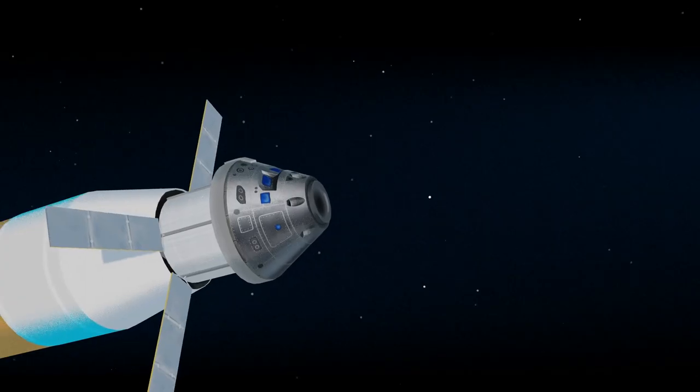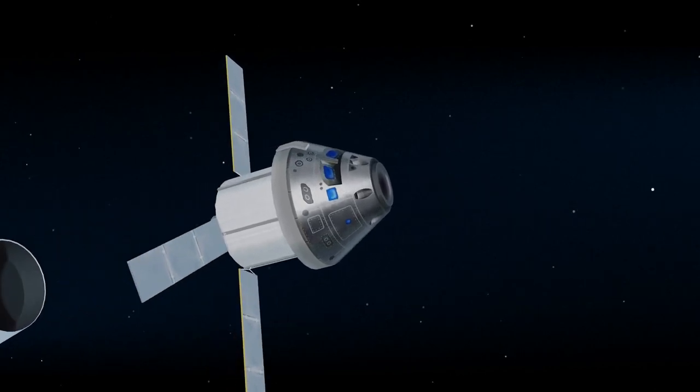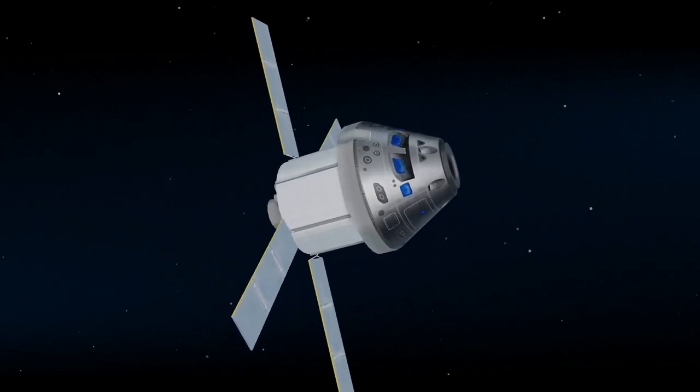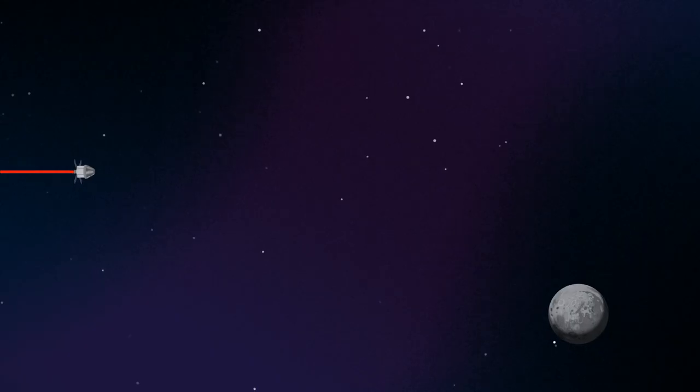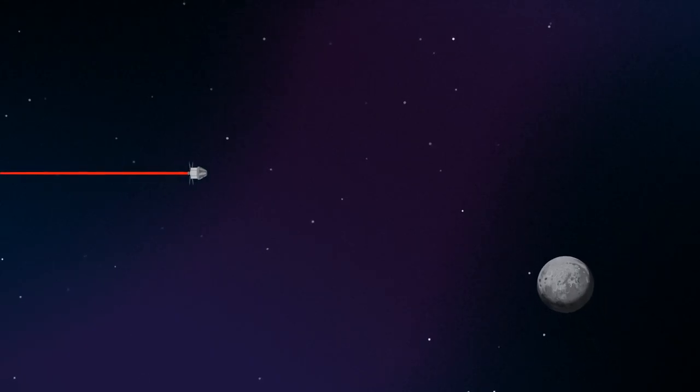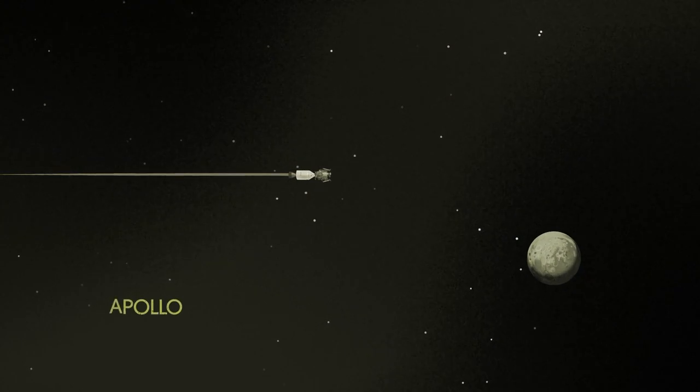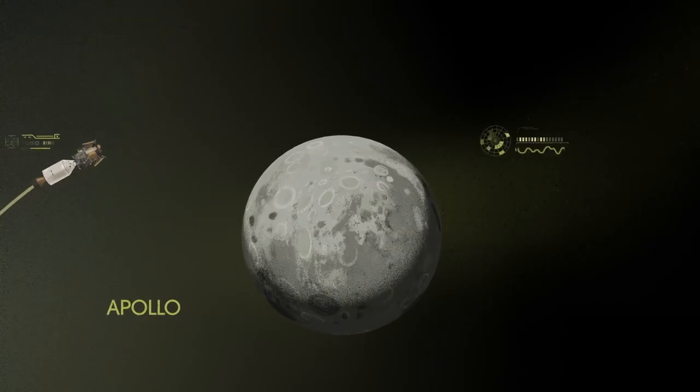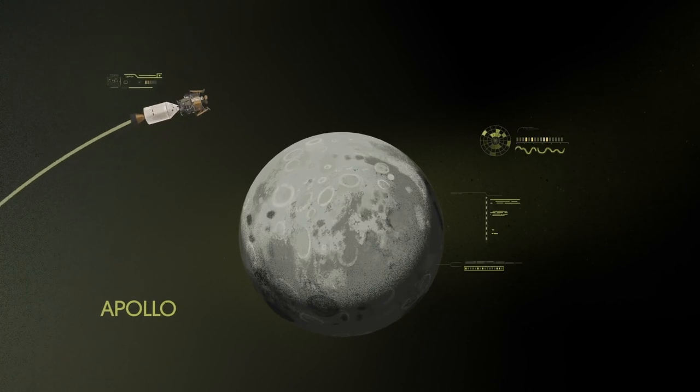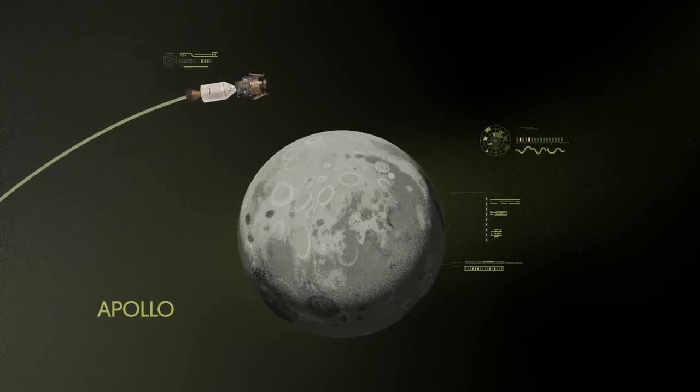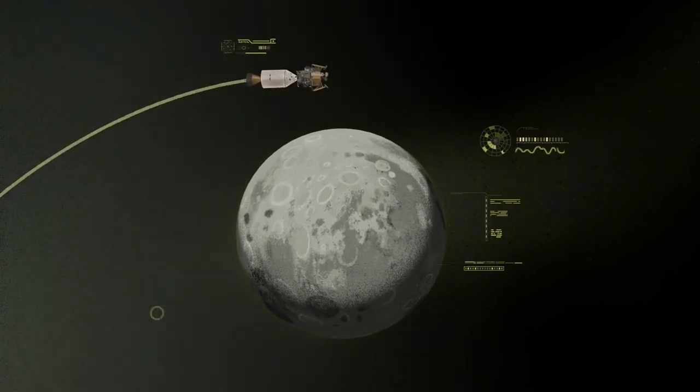Once this burn is complete, the upper stage of the SLS is jettisoned, and the crew aboard Orion coast for several days toward all that awaits them at the Moon. Approaching the Moon, we see the fundamental differences between Artemis and Apollo. Instead of requiring Orion to serve as an expendable lunar command module or to carry a constrained lunar lander, the Artemis missions will take advantage of a different approach, pre-staging.